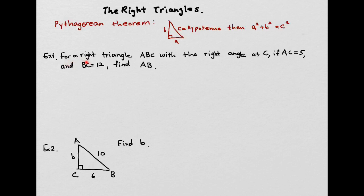The first one we're going to look at is right triangle ABC with the right angle at C. If AC is equal to 5 and BC is equal to 12, we want to find out what AB is equal to. When dealing with a geometry problem, I like to draw the picture first so we know what we're looking at. So let me draw the right triangle. The right angle is at C, and across from the right angle is the hypotenuse. We can put A and B on the other two vertices.